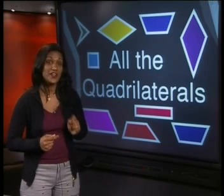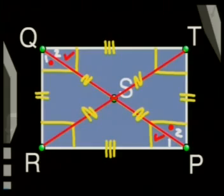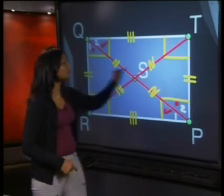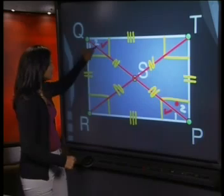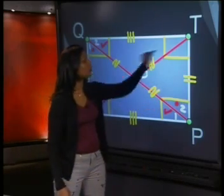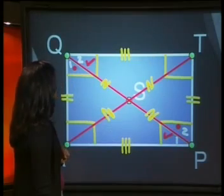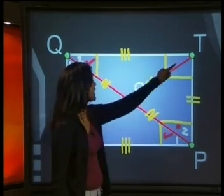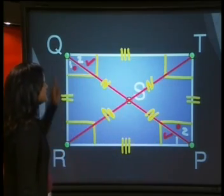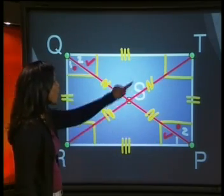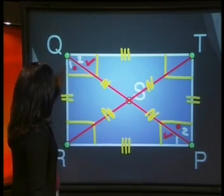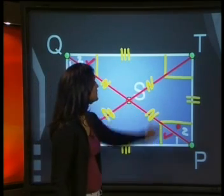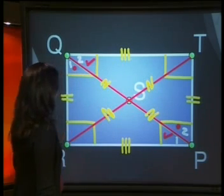Ready for the rectangle? The opposite sides are equal to each other. The angles at the vertex are all equal to 90 degrees. Diagonal QP is equal to diagonal TR. The diagonals also bisect each other, meaning QS equals SP and TS equals SR.